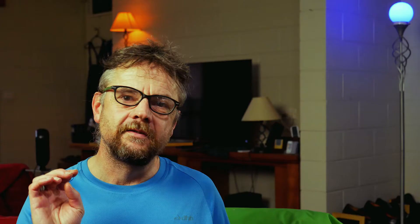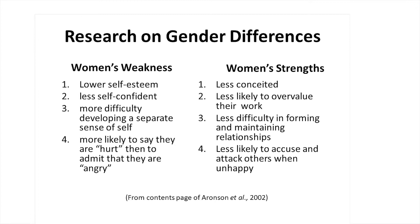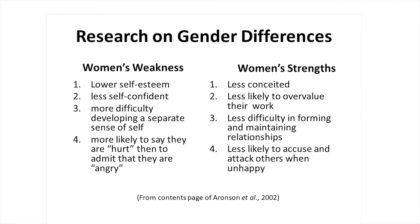Psychology has found many faults with women, including having lower self-esteem than men, being less self-confident than men, having more difficulty developing a separate sense of self, and being more likely to say they're hurt than to admit they're angry. However, even if such things were true, they don't have to be described as faults. We could say women are less conceited than men, less likely to overvalue their work, have less difficulty forming and maintaining relationships, and less likely to accuse and attack others when they're unhappy.